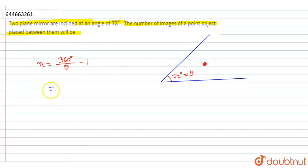this is equal to 360 degrees divided by theta. Theta is 72 degrees, and minus 1. So this is 5 minus 1. The number of images is equal to 5